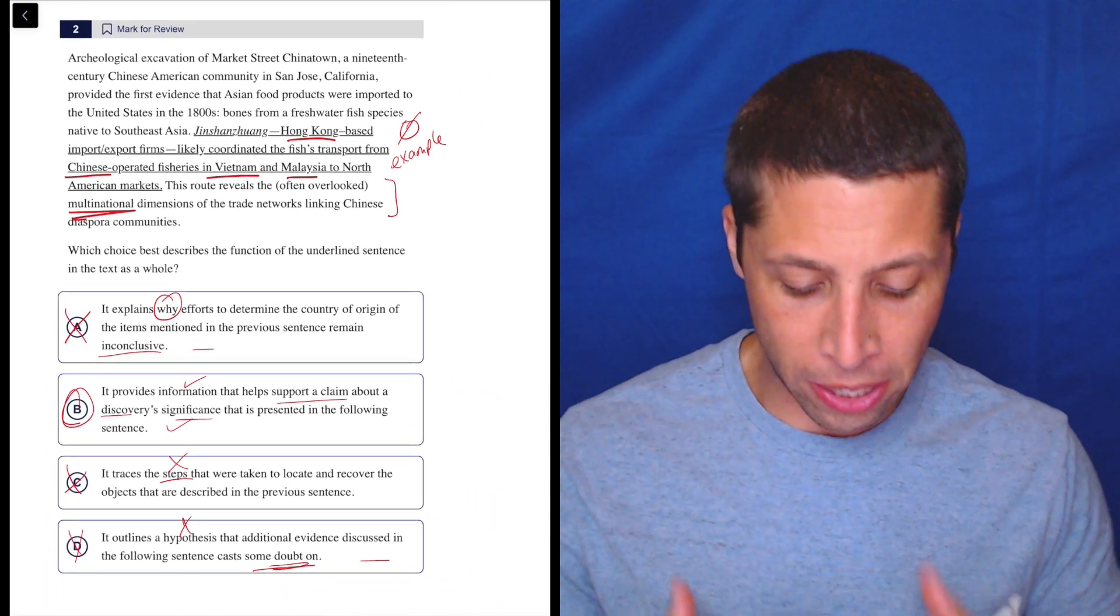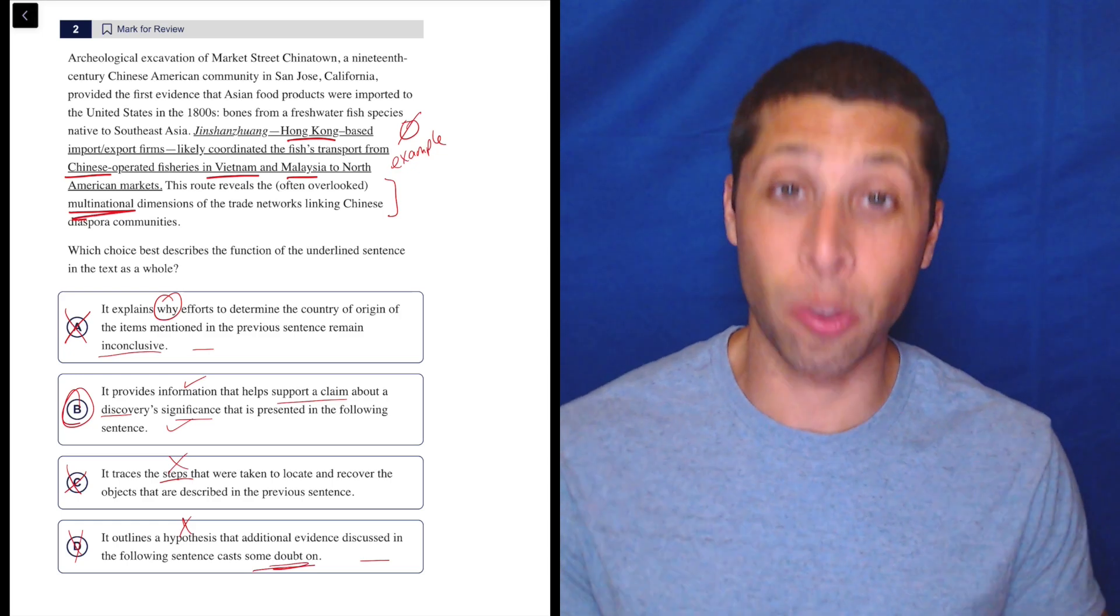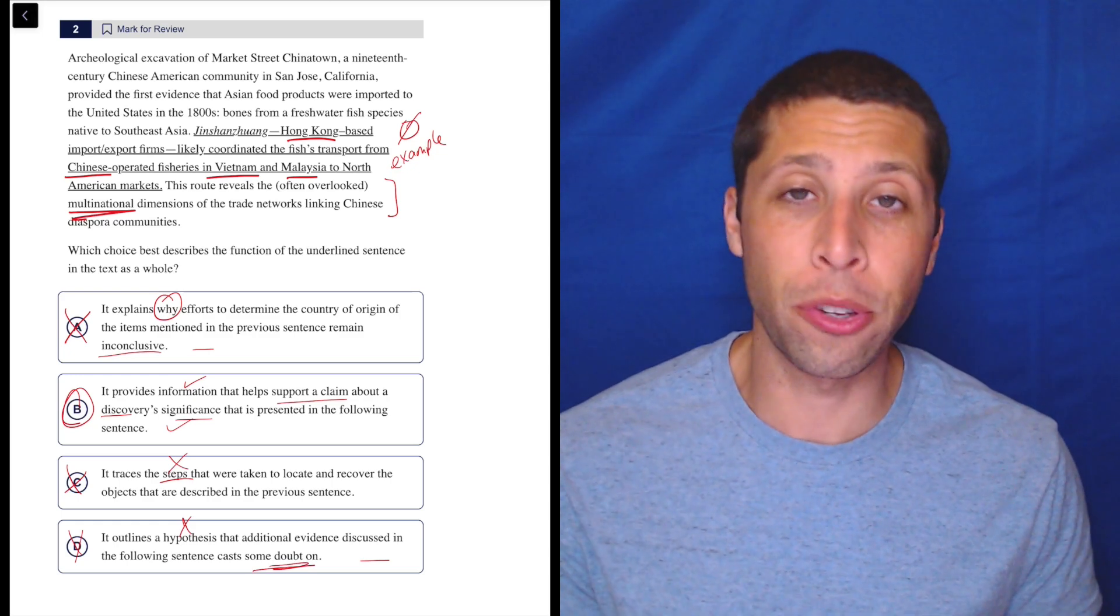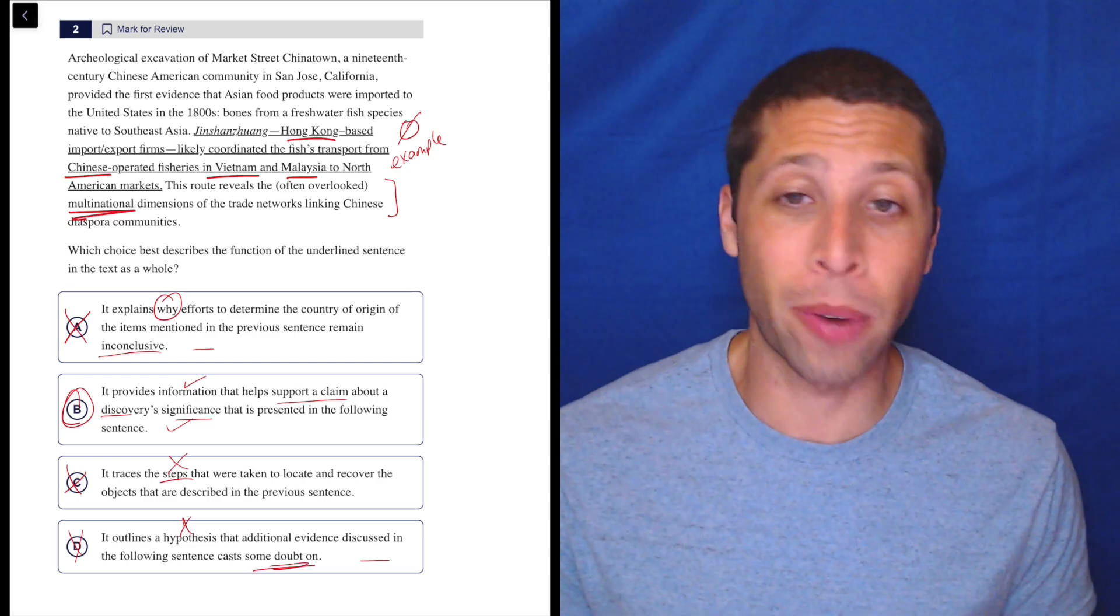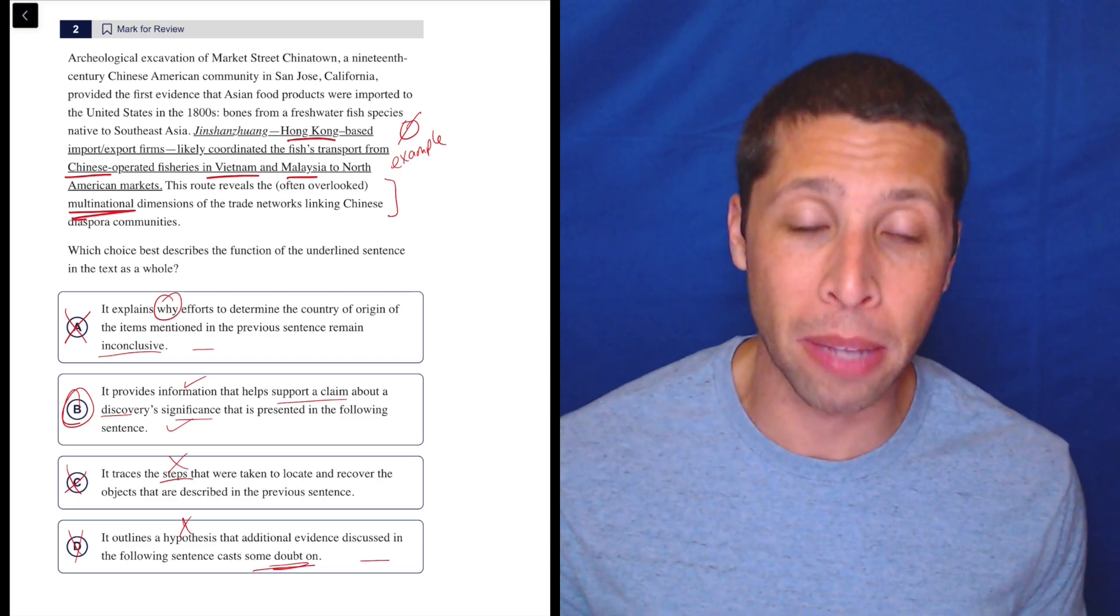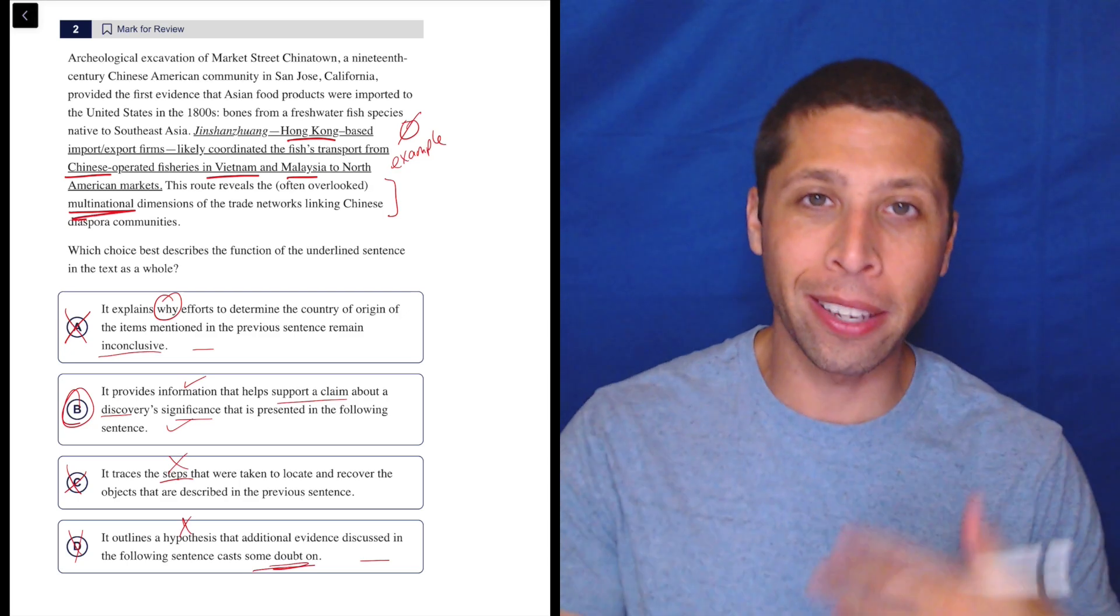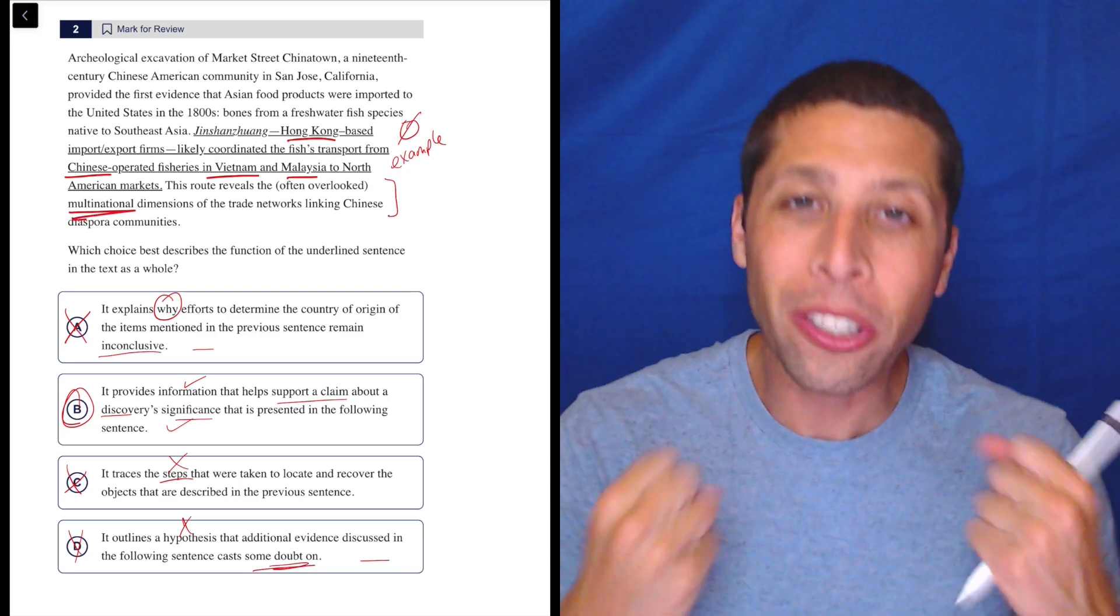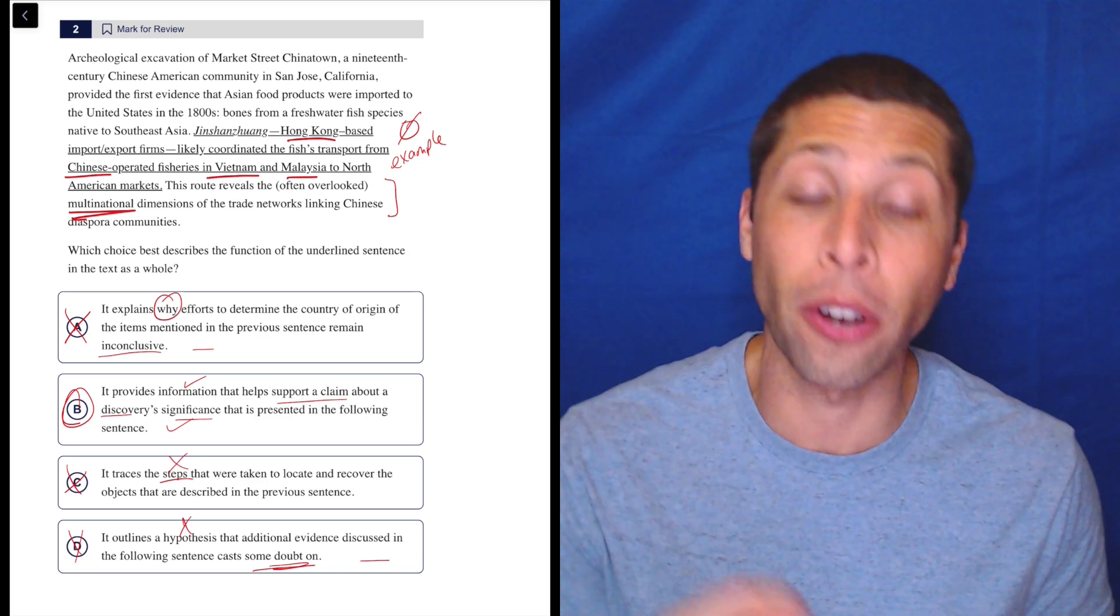So I really like these questions because they force us, even when they're easy, to try to think about the reasons we're eliminating things. So if you're just going through these choices and picking a thing that just feels most right, great. You're probably getting something like this right. The College Board considers this a medium-level question. But remember, I'm doing this more elaborate elimination process because you want to strengthen that skill for when they really get hard.